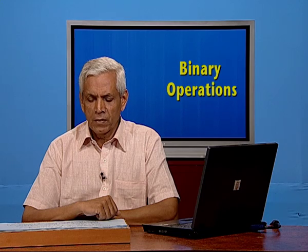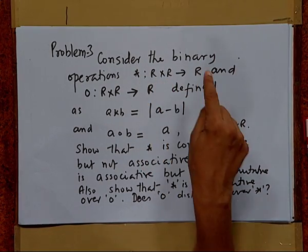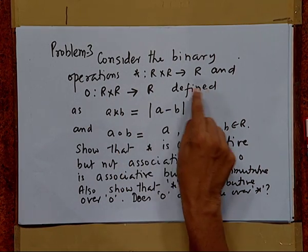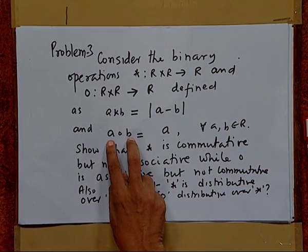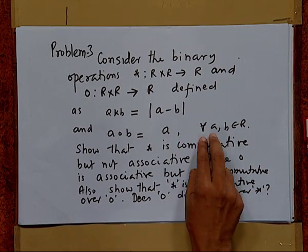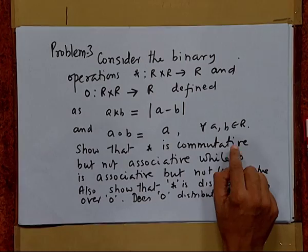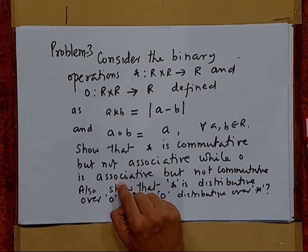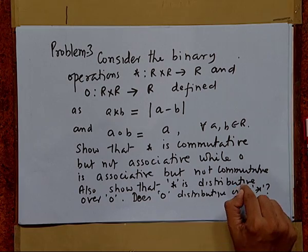Let us take one more example. Consider the binary operations star and O on R defined by A star B equals |A minus B| and A O B equals A, for all A, B belonging to R. We have to show that star is commutative but not associative, and also that star is distributive over O.